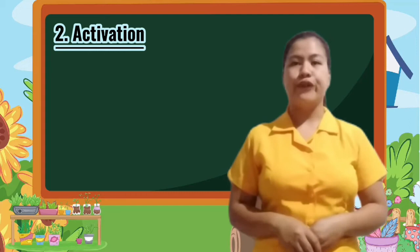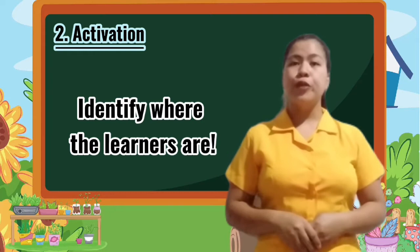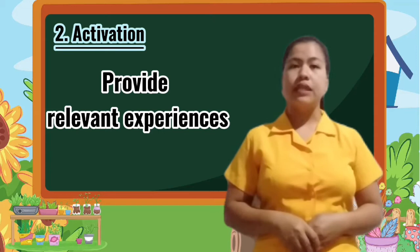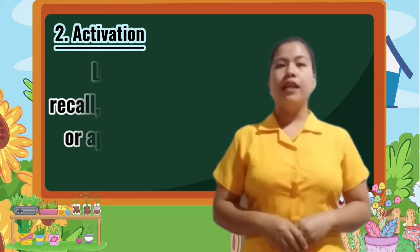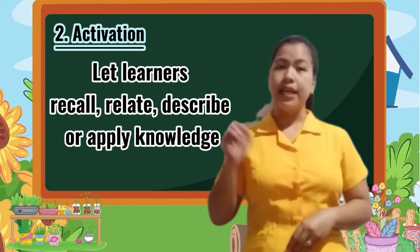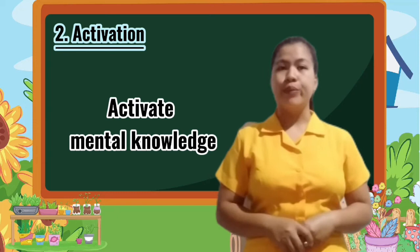The things we need to consider in the activation stage are the following. First, identify where the learners are before introducing new content to help them link the old with the new. Second, provide relevant experiences to ensure they have a basic understanding of the topic before introducing a complex concept. Third, let learners recall, relate, describe, or apply knowledge from relevant experiences that can be used as a foundation for new knowledge. And lastly, activate mental knowledge — activating those mental models that can be modified or tuned to enable learners to incorporate the new knowledge into their existing knowledge.